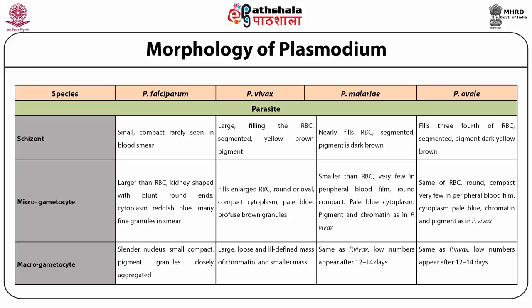The microgametocyte of Plasmodium vivax fills the RBC, is large, round, oval, compact, and blue in color. In Plasmodium falciparum, microgametocytes are larger than the RBC, kidney-shaped with a blunt round end, cytoplasm reddish-blue with many fine granules. In Plasmodium malariae, microgametocytes are smaller than the RBC, few in number in peripheral blood, cytoplasm is round and compact with pale blue color. Plasmodium ovale microgametocytes are round, compact, very few in peripheral blood, cytoplasm is pale blue, and chromatin and pigment are similar to Plasmodium vivax. Macrogametes of Plasmodium falciparum are slender with a small compact closely aggregated nucleus. Plasmodium vivax macrogametes are large with a loose, ill-defined mass of chromatin. Plasmodium malariae macrogametes are similar to Plasmodium vivax with a low number appearing after 12 to 14 days. Plasmodium ovale is very similar to Plasmodium vivax with low numbers appearing after 12 to 14 days.